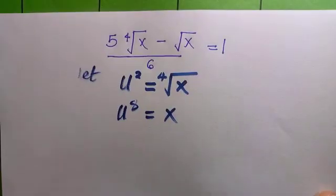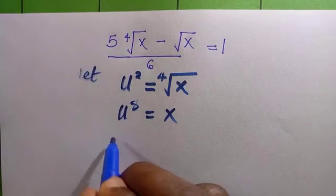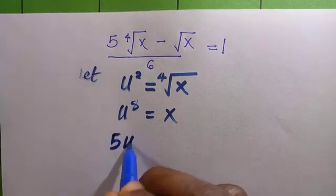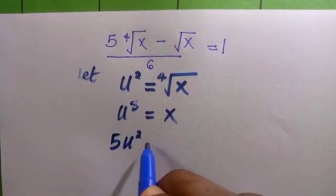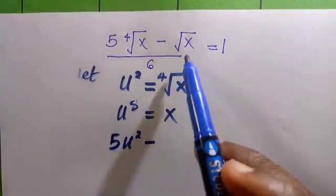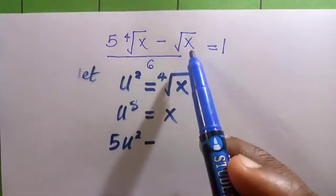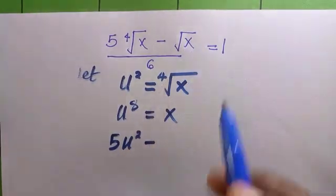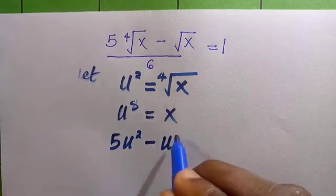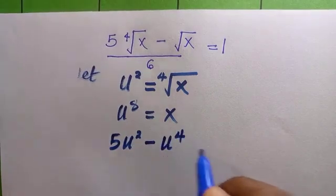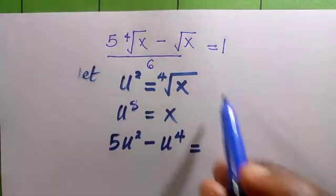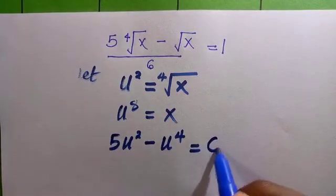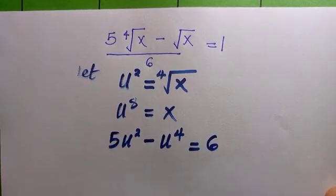Going back to the original equation: five times the fourth root of x, minus the square root of x, divided by six equals one. Substituting, we have five u² minus u to the power four, all divided by six, equals one. Multiplying both sides by six gives us six.